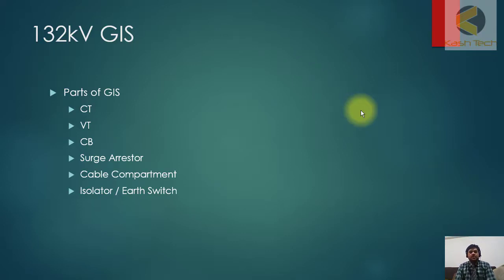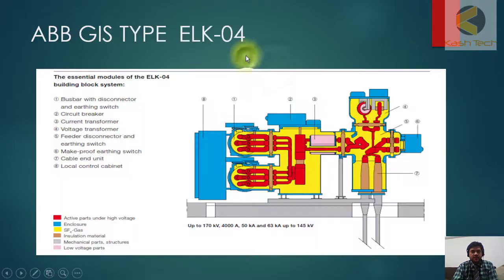GIS is an acronym for Gas Insulated Station and they are available at 132 kV level, 220 kV level, and 500 kV levels. Now we'll move to the next slide. I have shown you a typical GIS cutout which is ELK-04, showing how the GIS is built.